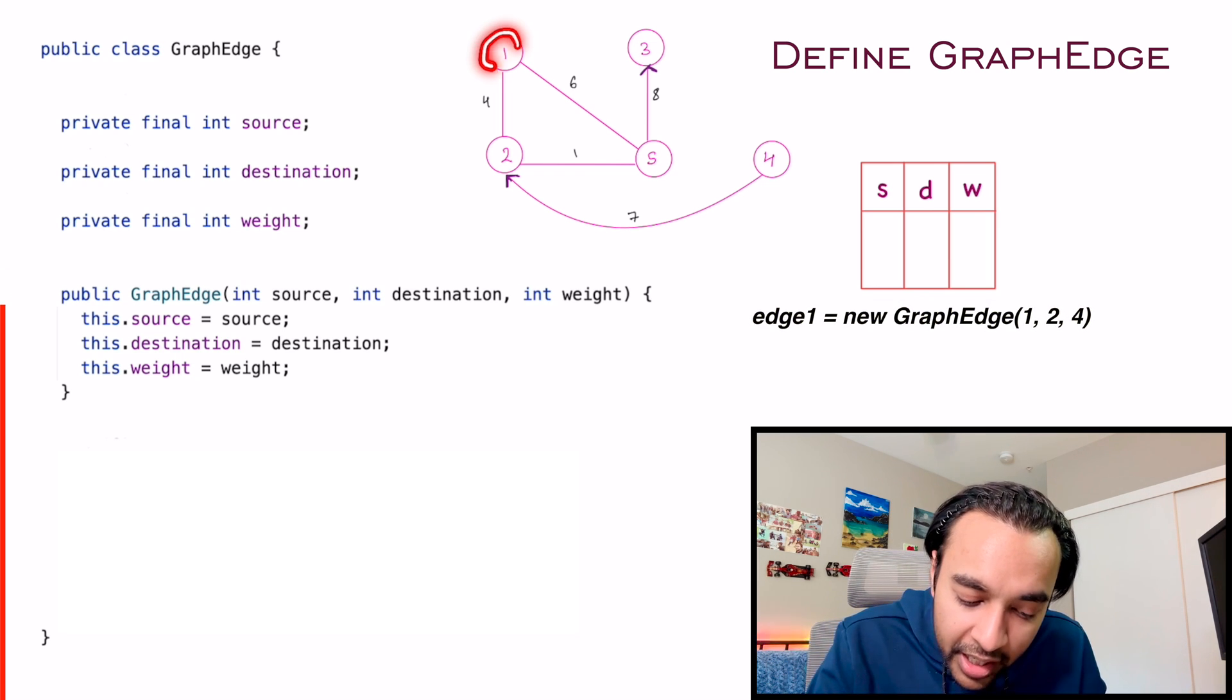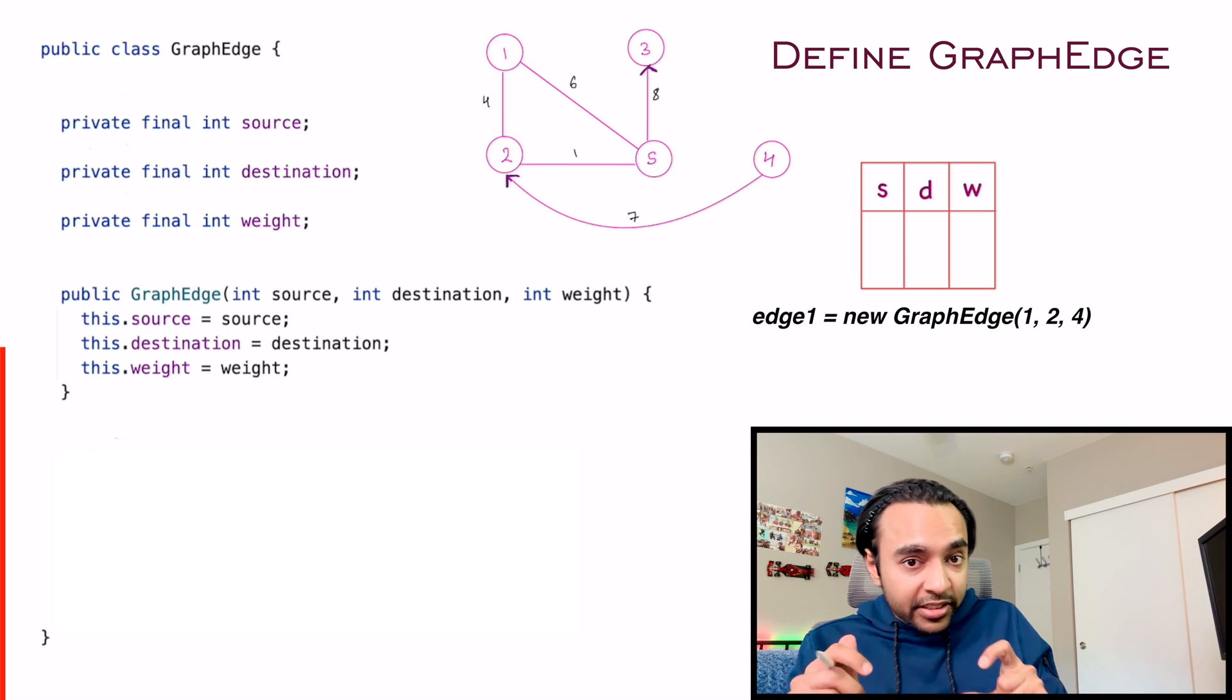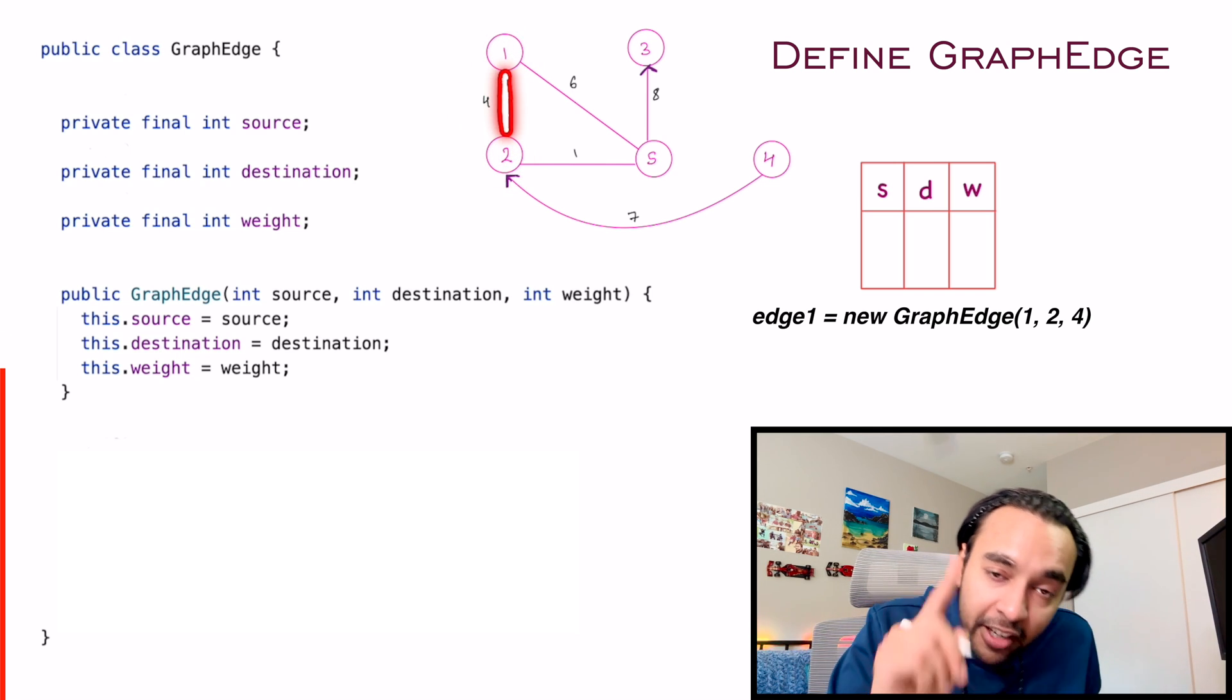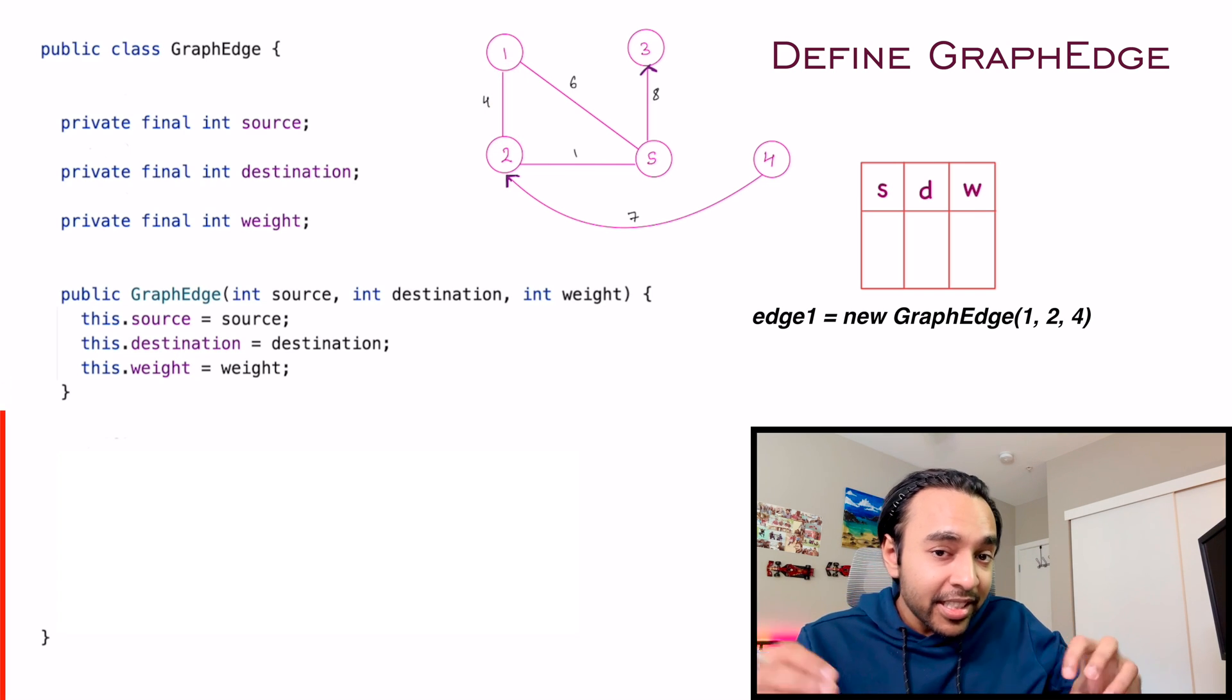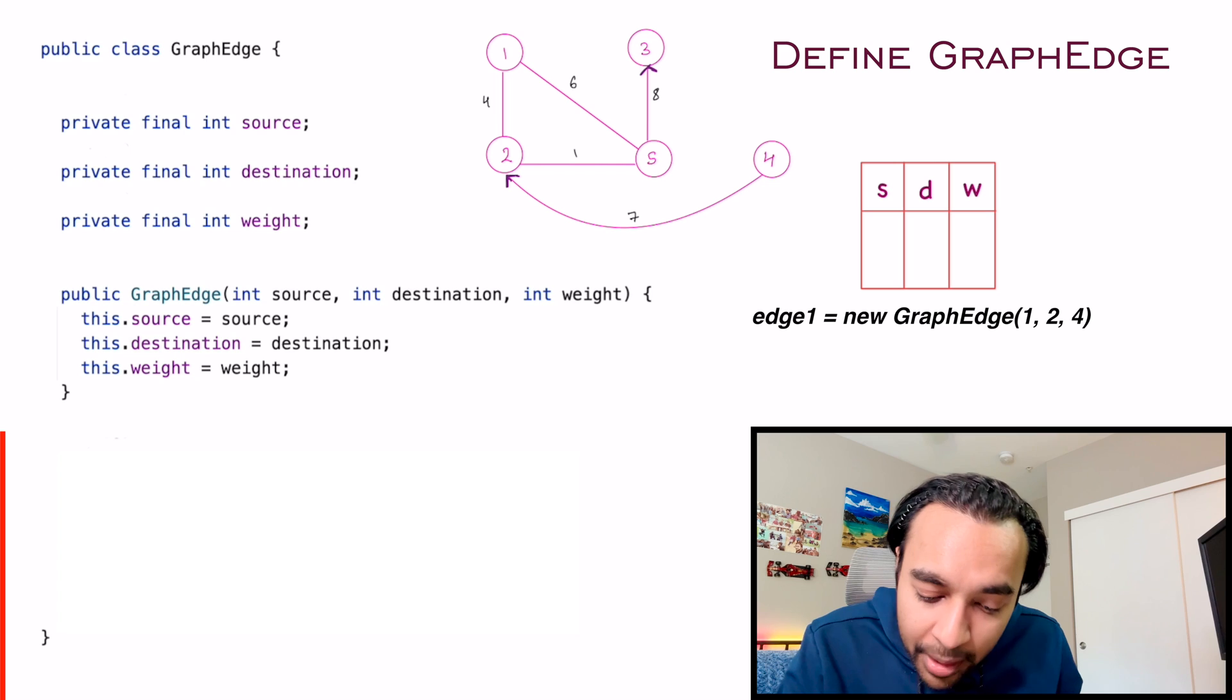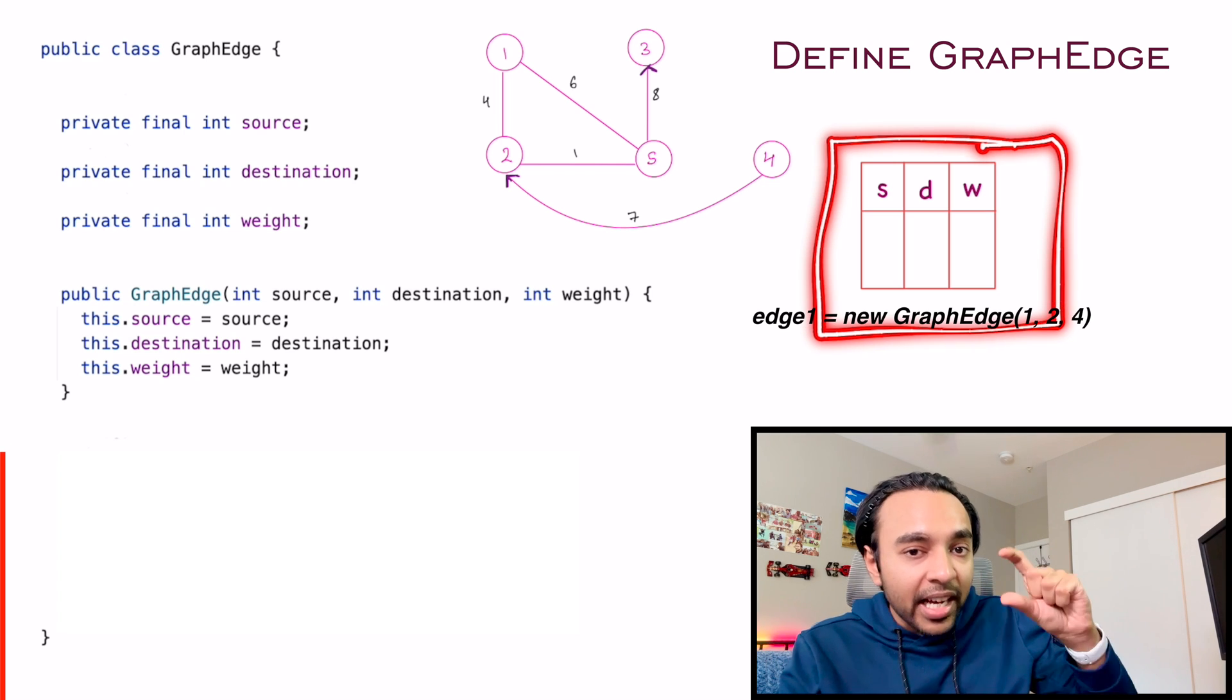So I will say something like new graph edge, and then the source is one, the destination is two, and the weight is four. So this is how I am defining one edge. So what is basically happening is, instead of a linked list, I am now defining an edge as an object.